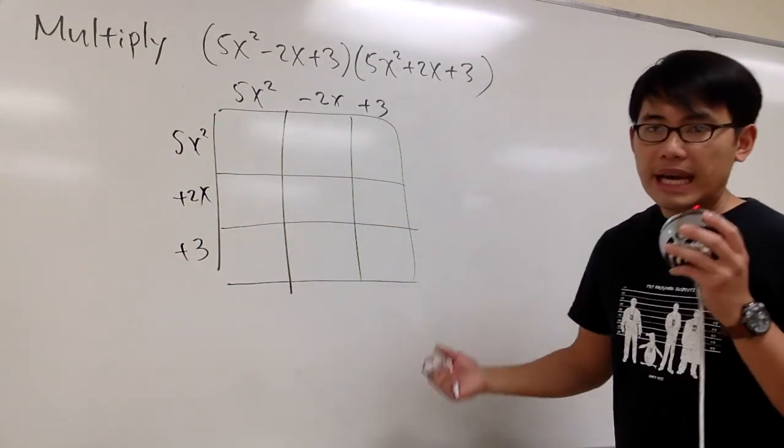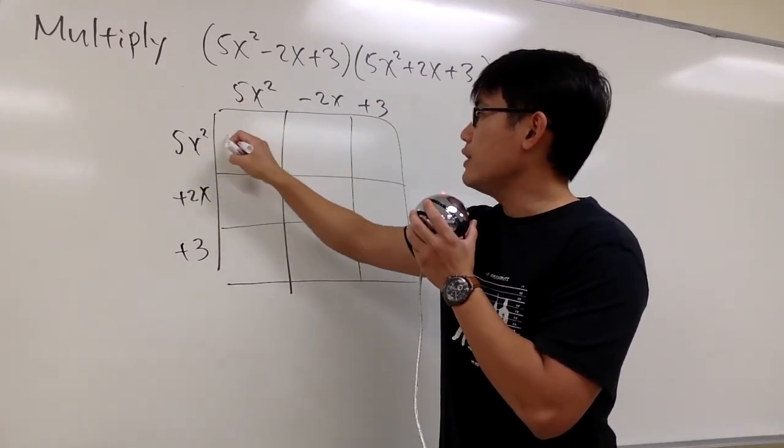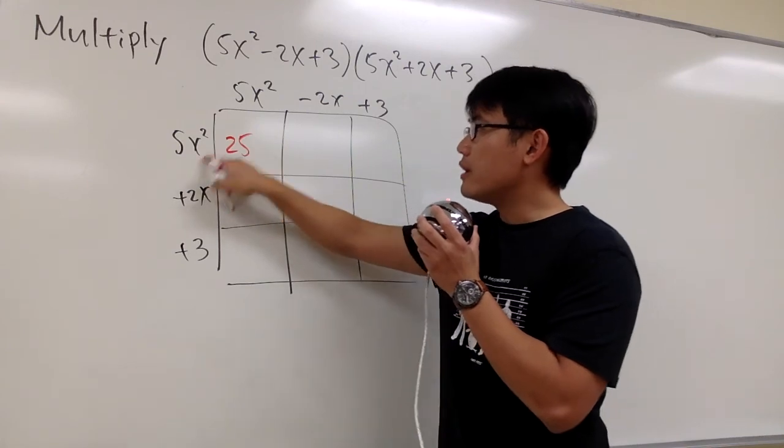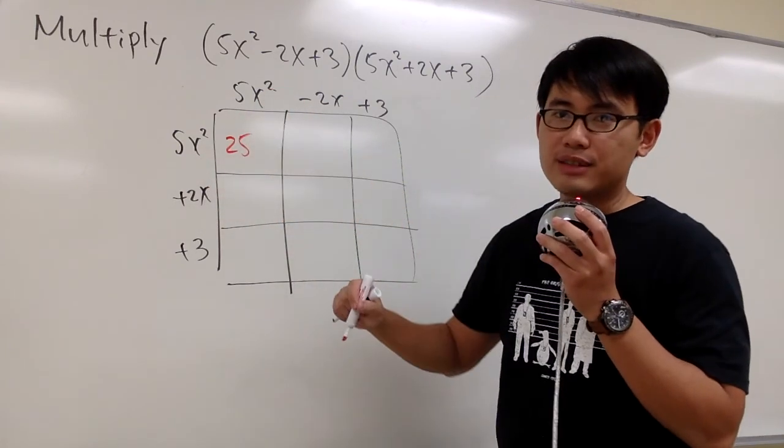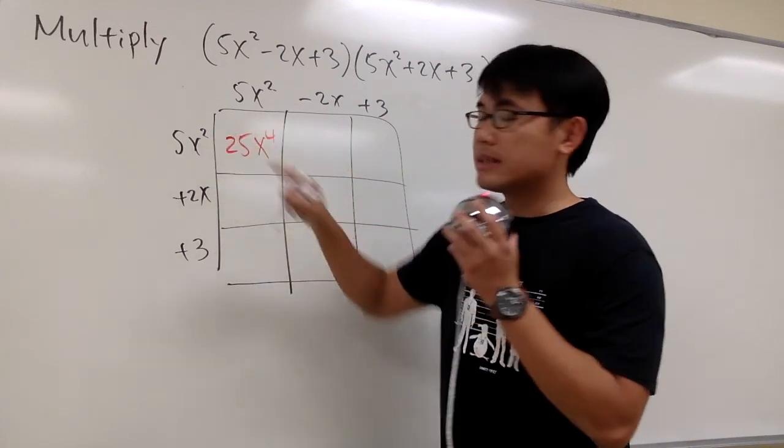We'll just go ahead and fill in the boxes. To do this, we multiply this and that. 5 times 5 is 25, and x² times x² gives us x to the power of 4. So remember, when we multiply, we add the exponents up.